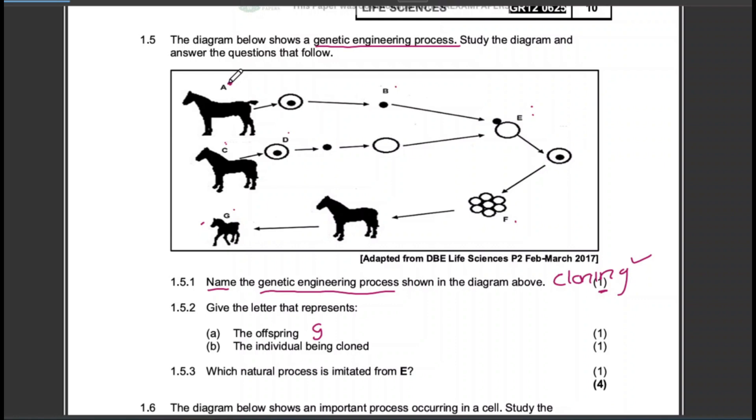And the individual that is being cloned here, the genetic material there is B. So this genetic material is from organism A, so the individual that is being cloned is individual A.